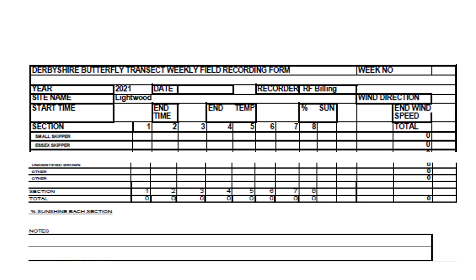Here's a typical recording form. In the top right-hand corner we put the week number, the site name, the date, and who's actually doing the recording, because it might be a few of you doing the survey route. On the right-hand side we've got the wind direction and wind speed, and on the left-hand side the start and finish time and the temperature. I've cut this recording form in half, so you'll see small skipper at the top and unidentified brands and others at the bottom, with about 20-odd butterflies in the middle to record.